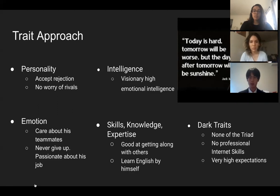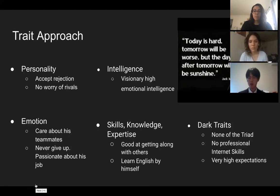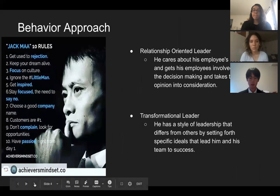He has very high emotional intelligence, which allows him to get along well with others. One amazing skill of Jack Ma is that he learned English by himself. Combining all of this, we can see he is a good leader, but he has non-professional internet skills. Also, he always has very high expectations for his team, which could be considered his dark traits.